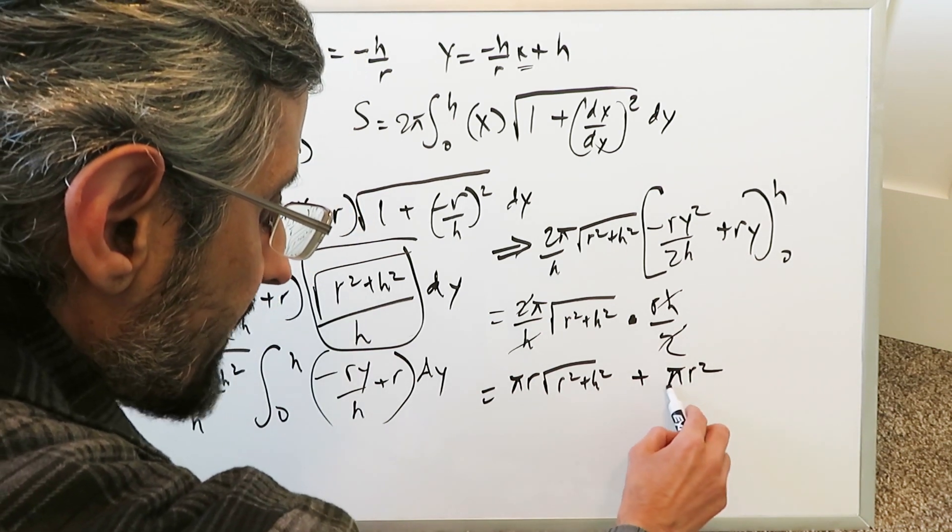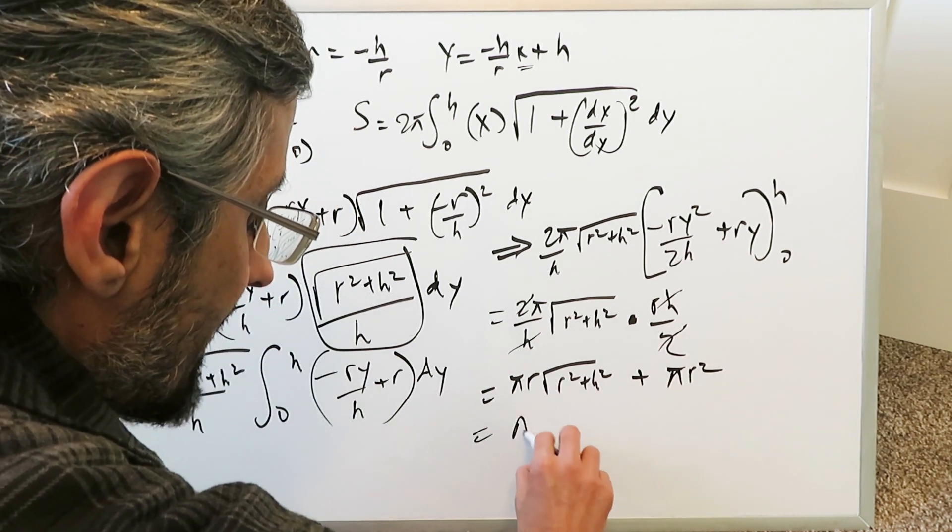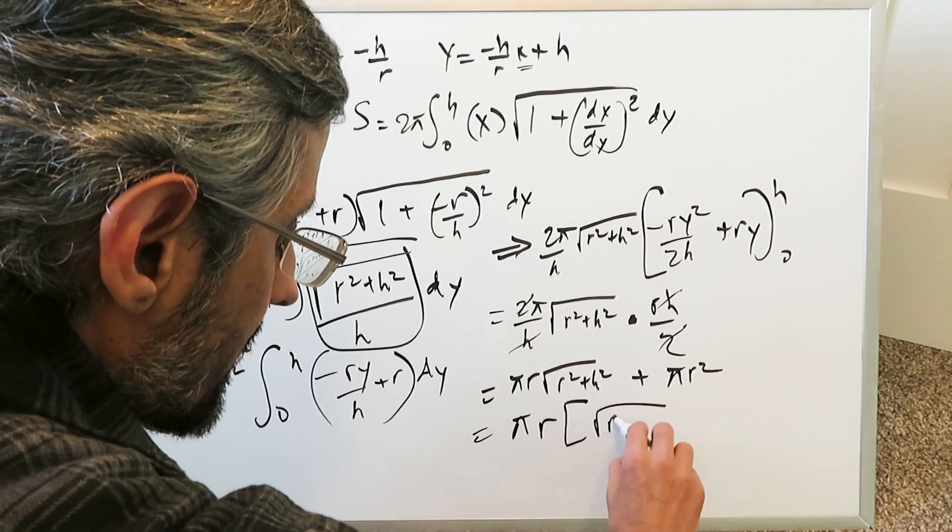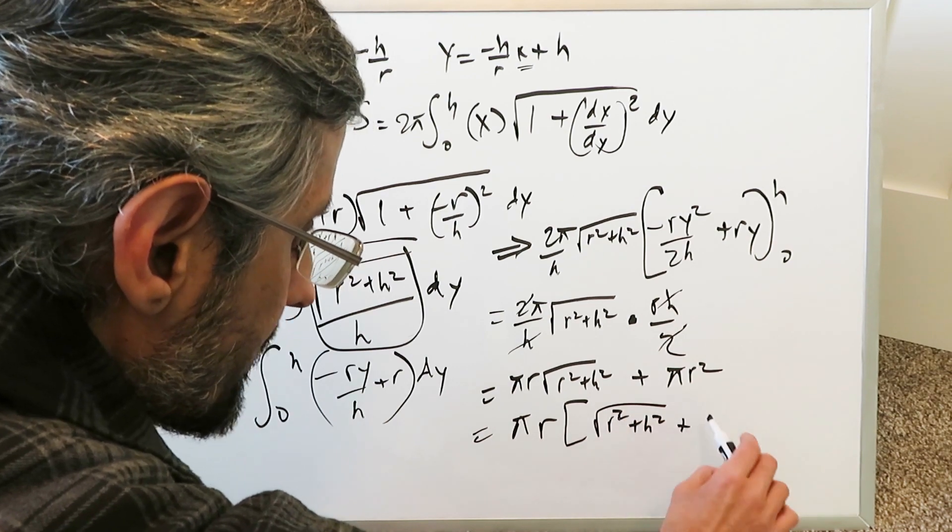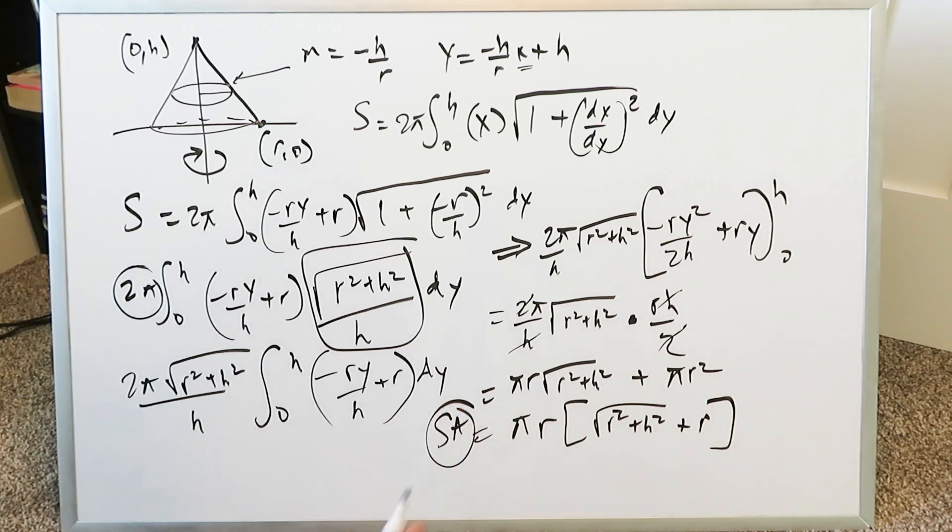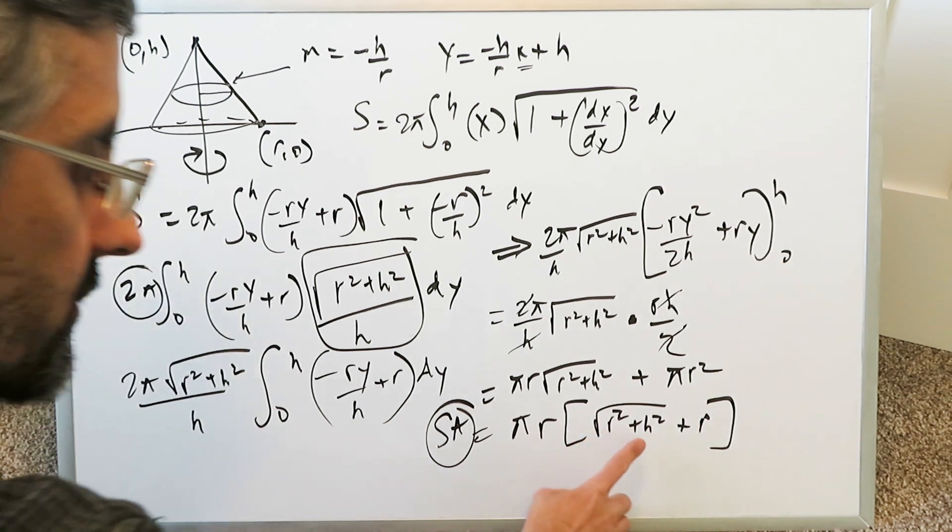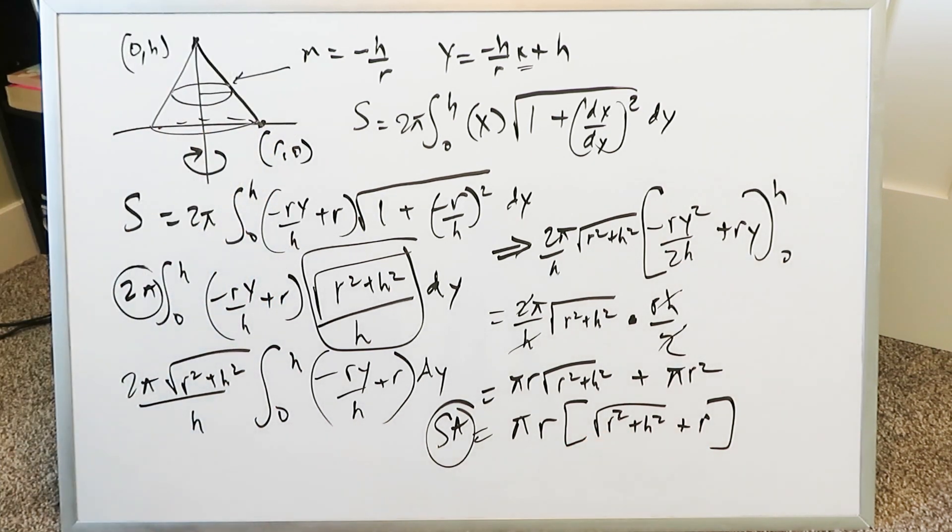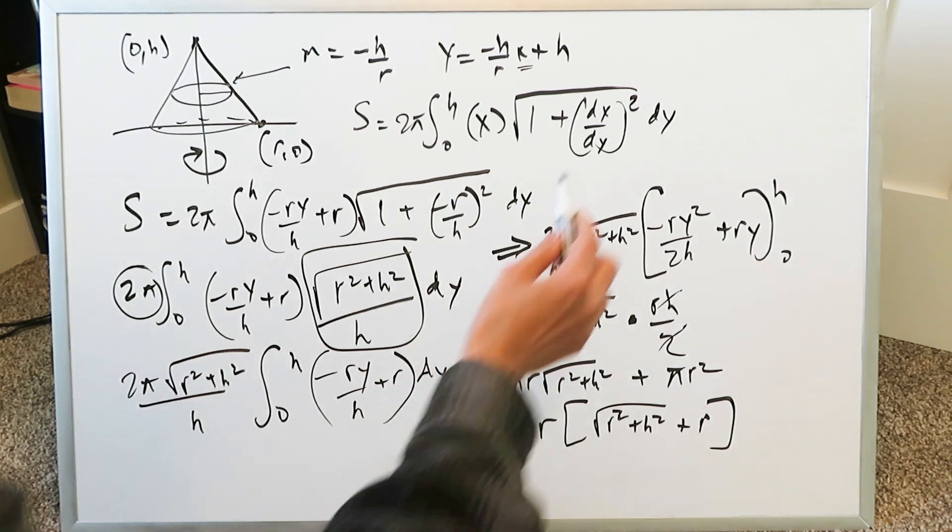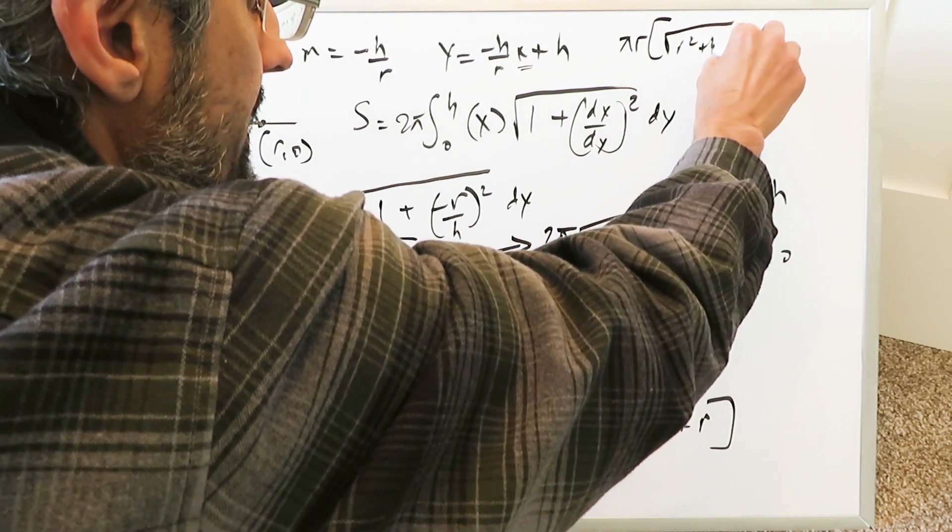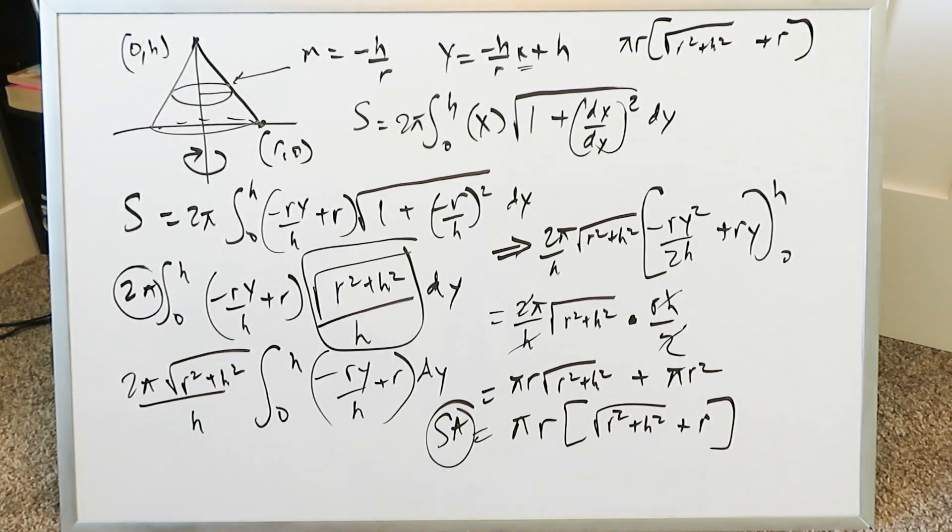When we add in the circle area we have pi r square. When we see some common terms we have pi r. And we isolate them. I am isolating pi r. Then from here I have a root of r square plus h square. And then from here I have an r. That right there leads me to my actual surface area of a right circular cone. It's pi r, parentheses root of r square plus h square plus r. And there it is. That's the formula we want.